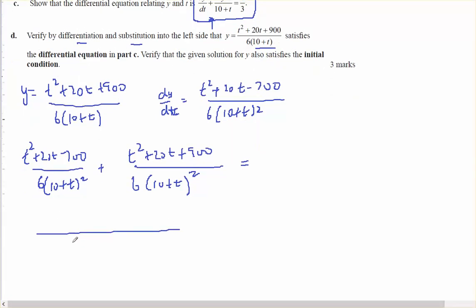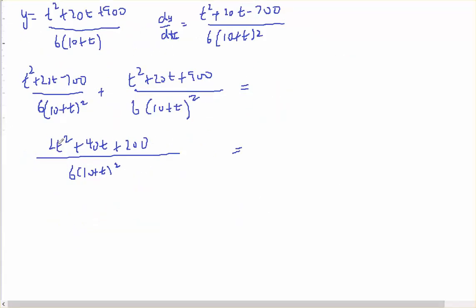This is all over 6(t plus 10) squared: 2t squared plus 40t plus 200. That's still the left hand side. I've got a common factor of 2 outside of t squared plus 20t plus 100. That's the perfect square of (t plus 10), all over 6(10 plus t) squared.